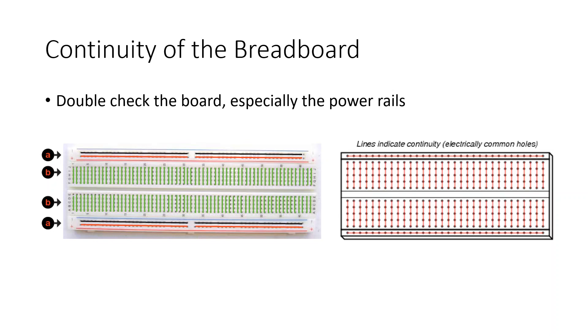First step, we're going to check the continuity of the breadboard. If this is the first time you've used this breadboard, it's critical that we check the continuity. As you can note in these two images, the power rails might be slightly different. In this case, how this one is broken across, and this one is continuous all the way across.